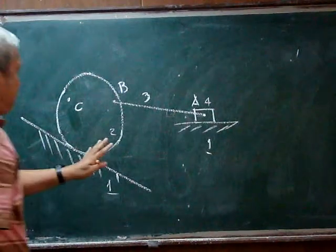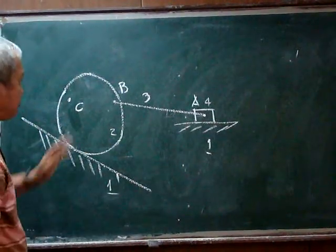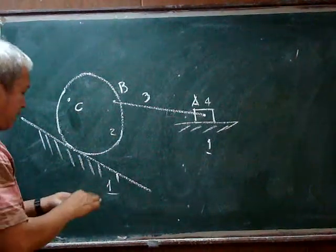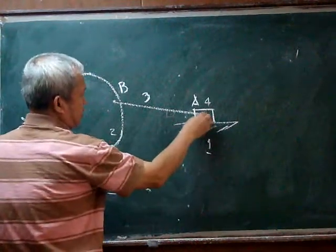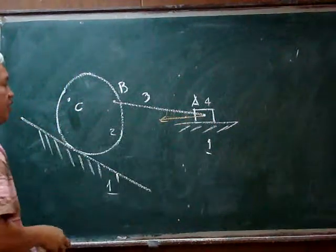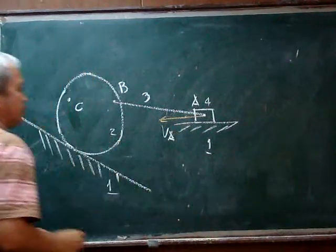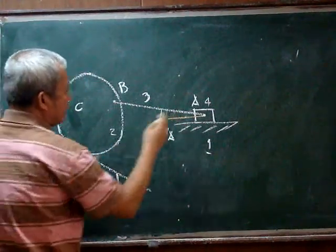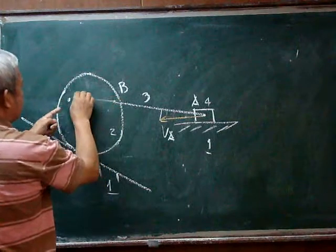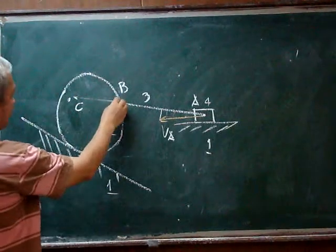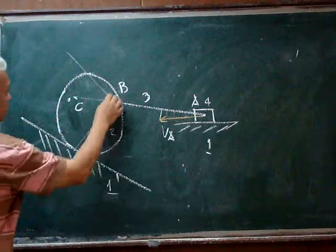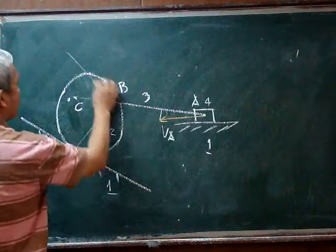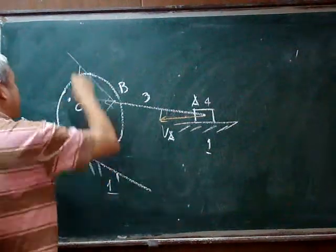We can analyze the velocities of this machine in terms of the three methods that we have studied. If we are given the velocity of point A, by the resolution and composition method, we can resolve this into two and transfer this vector right here. We know the direction of the velocity of point B is perpendicular to that line, and so therefore the velocity of point B must be this vector.